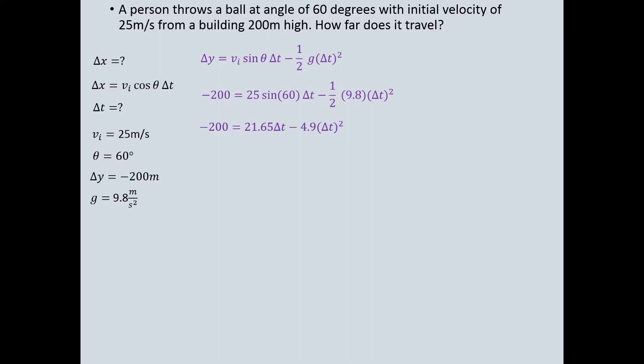A little algebra reminder, though there are two delta t variables, the powers are different which prevents us from combining them. I'm going to add 200 to both sides and rearrange some of the terms. And hopefully this may have sparked a familiar math concept, the quadratic equation.